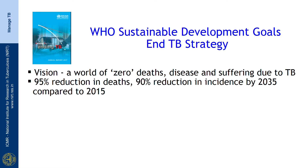The End TB strategy envisages a world of zero deaths, disease, and suffering due to TB. It aims at a 95 percent reduction in deaths and 90 percent reduction in incidence of TB by the year 2035 compared to 2015.